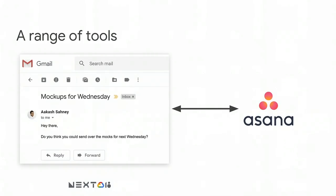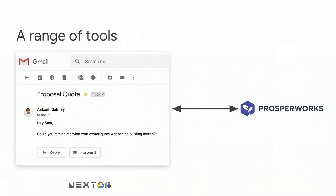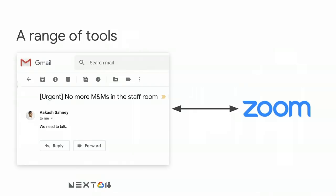For example, if a designer gets an email in Gmail with a task that they need to complete, they have to switch over to their project management tool to make sure that it's tracked. Or if a salesperson makes contact with a new prospect, they have to switch to their CRM tool to create the account and track the lead. Or if you get an email about something really urgent and you need to jump into a video call right away, you have to switch to your conferencing app.